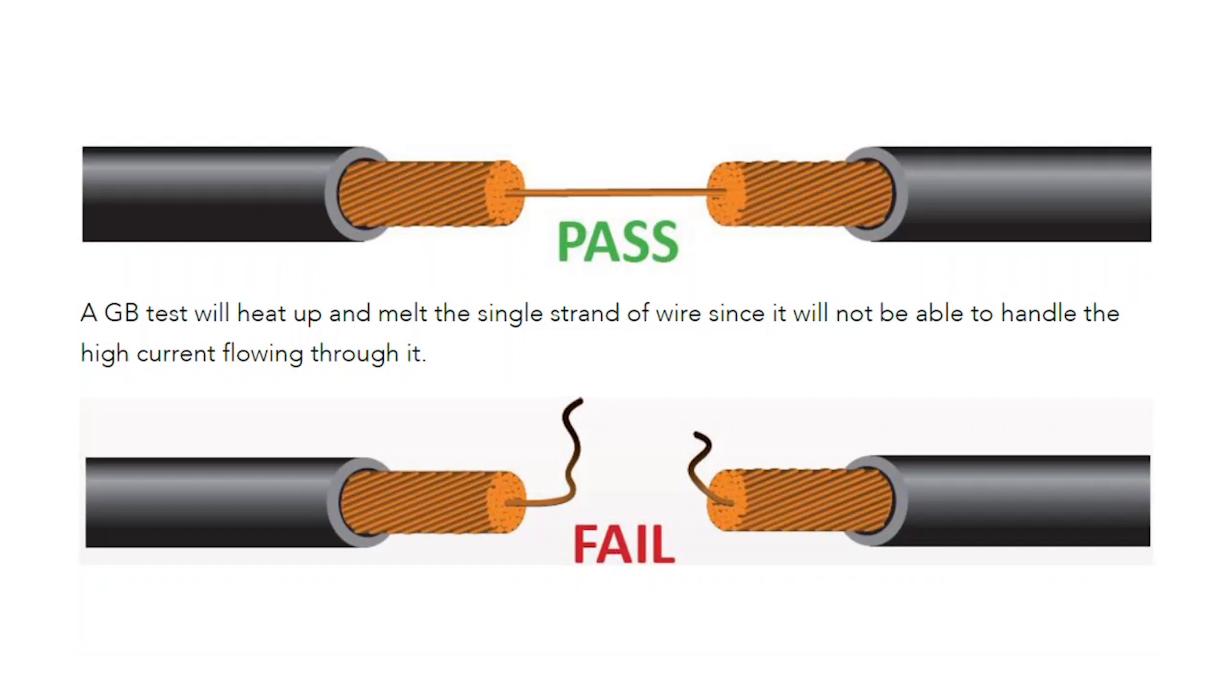Whereas if we were to perform a ground bond test on the same single strand of wire, it will most likely heat up and melt since it will not be able to handle the high current flowing through it. And this is why the ground bond test is regarded as the more stringent of the two tests.